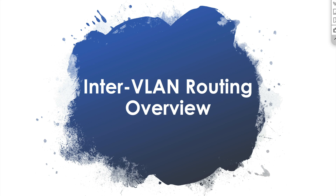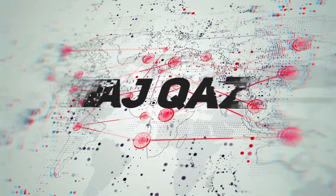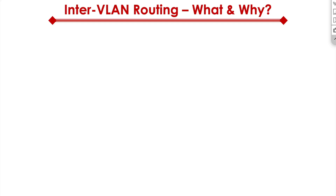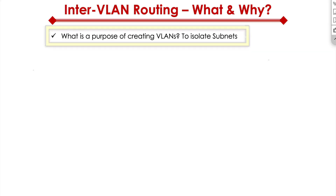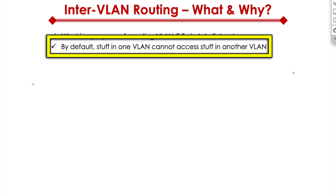I want to discuss the concept of inter-VLAN routing. Why do we need inter-VLAN routing? If you guys remember, why do we create VLANs to begin with? We want to reduce the scope of the broadcast domains and isolate subnets. By default, stuff in one VLAN cannot talk to another VLAN.